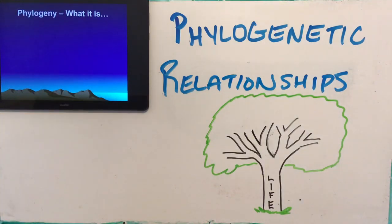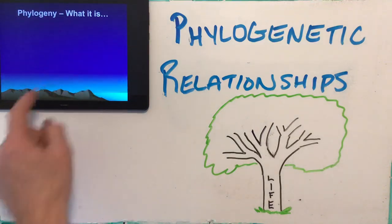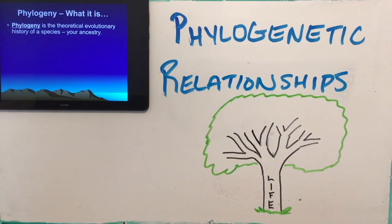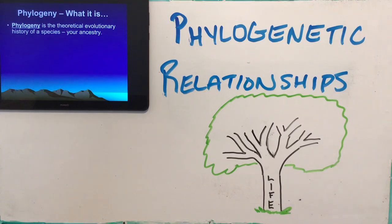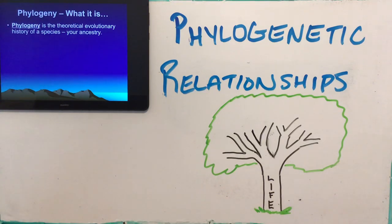What is phylogeny? Phylogenetic relationships are based on phylogeny, so it's important to know what it is. It's the theoretical evolutionary history of a species. Why is it theoretical? Well, we talked about the fossil record and said there are missing links. The fossil record is not complete, and our ability to get DNA from it and see who's really related to whom is getting better with fossils, but it's not 100% yet. So there are these little gaps. It is theoretical, but it's basically your ancestry — your evolutionary history that shows who you're related to.